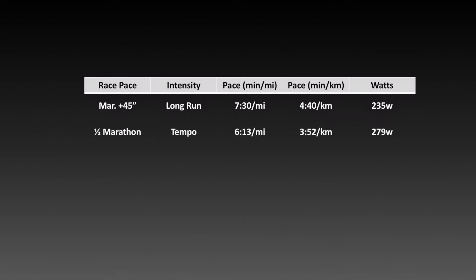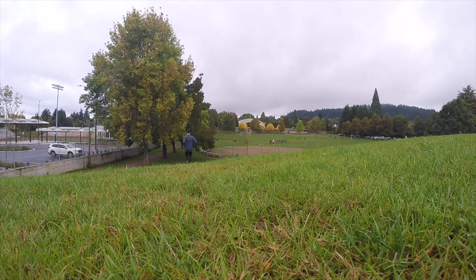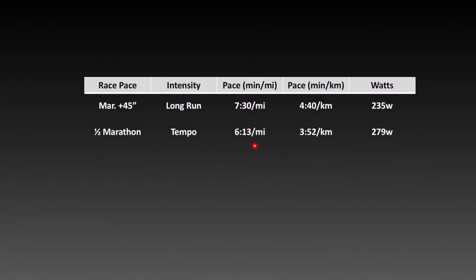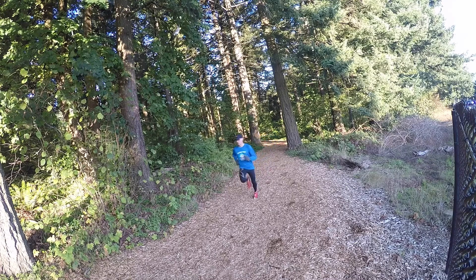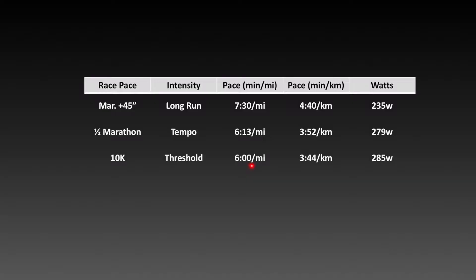For my half marathon pace, which is the intensity I use for tempo runs, that comes out to 279 watts. My 10K race pace is close to my threshold training — that's about six minutes a mile or 3:44 per kilometer — and that's 285 watts.